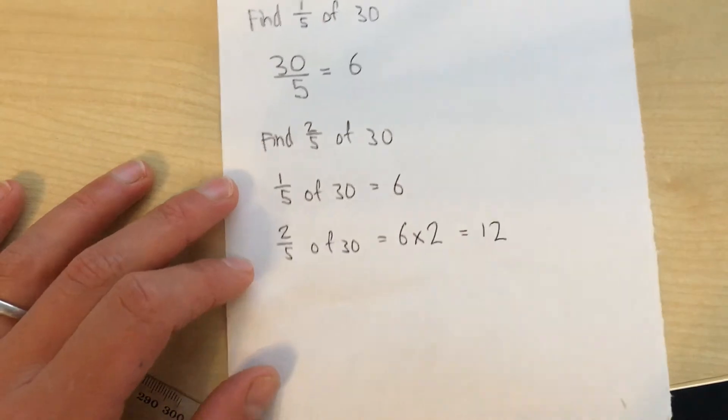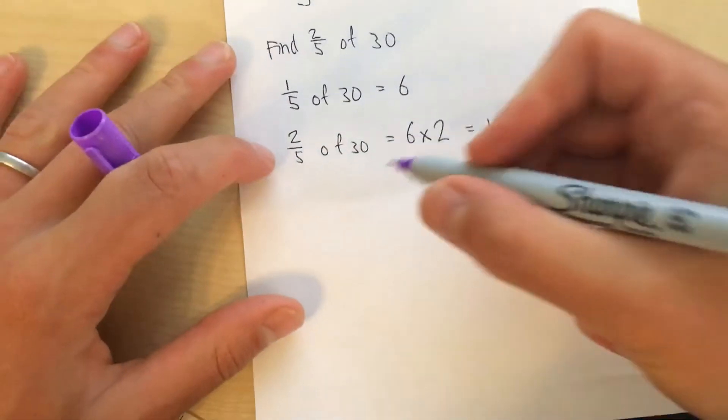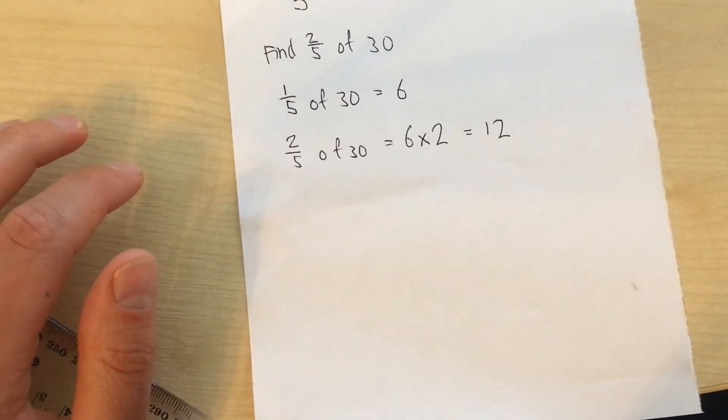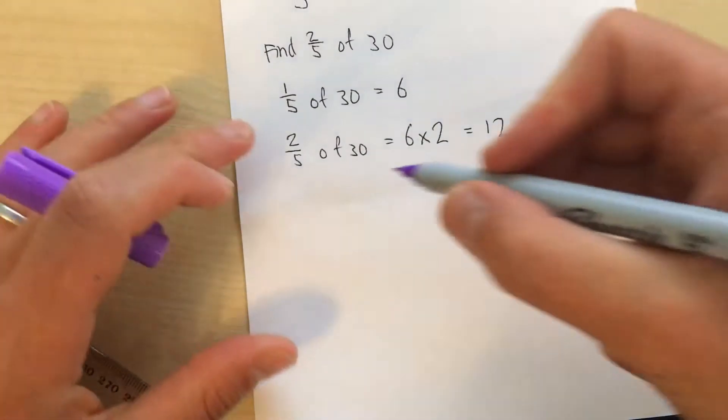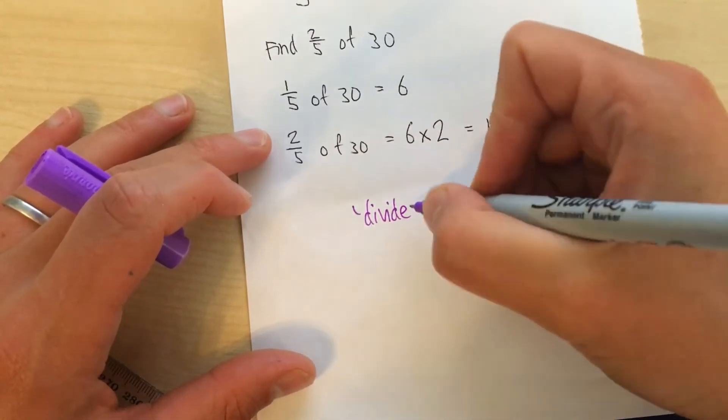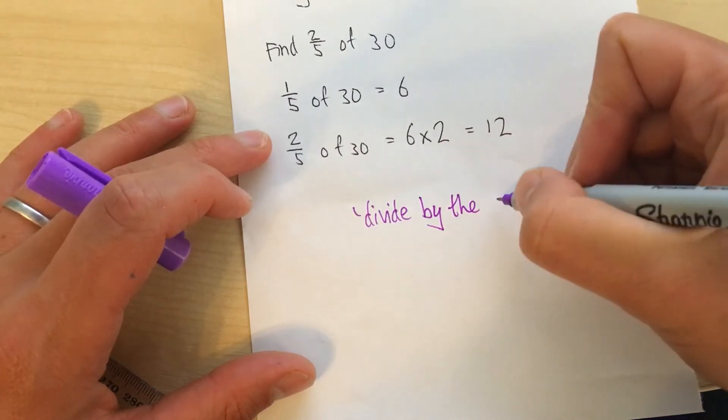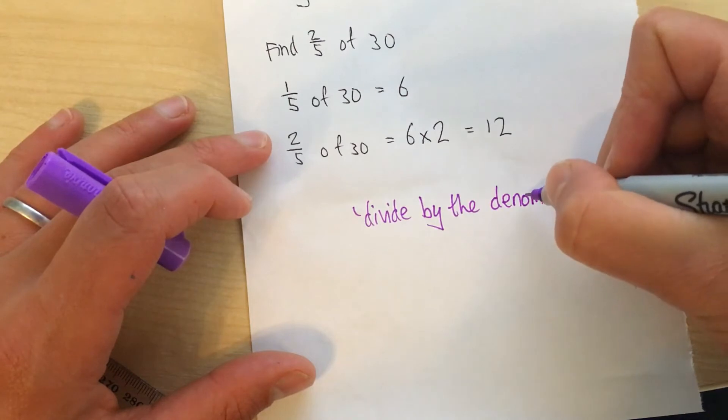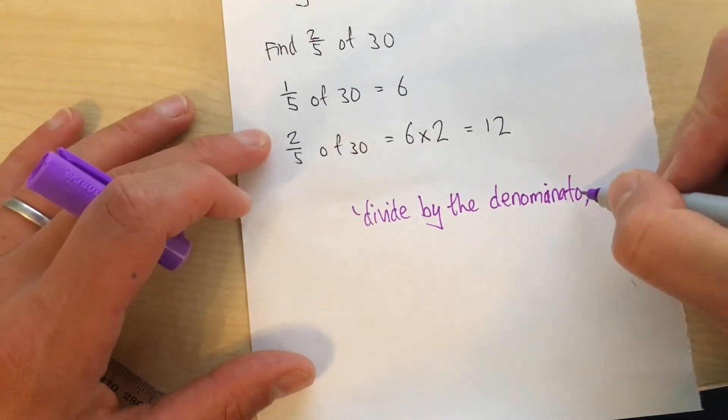Now I've got a rule for this to help me remember. Divide by the bottom then times by the top. Divide by the bottom. Or we were going to be really smart about it. We call it the denominator. Divide by the denominator.